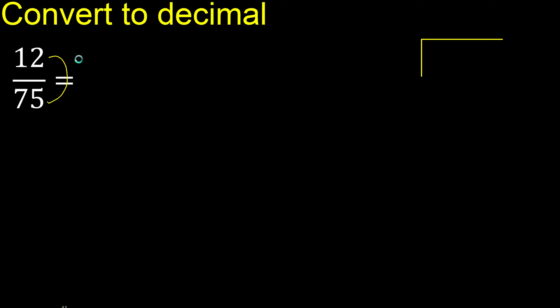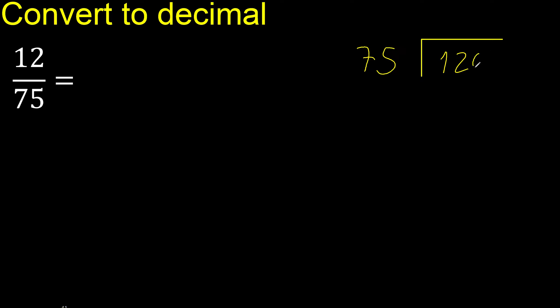12 divided by 75. 12 is less, therefore complete with 0. Here: 0 point.